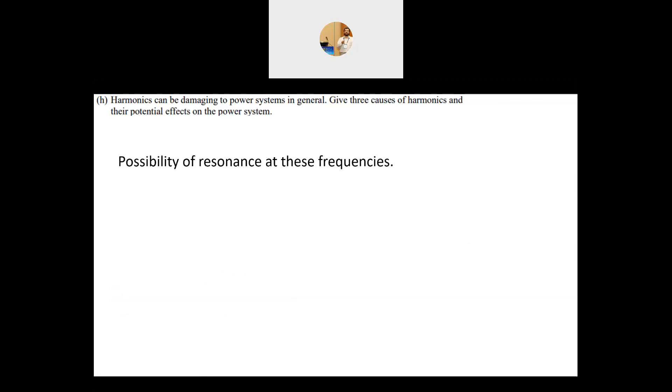The third effect is the possibility of resonance at these frequencies. When you design a system, the power system is basically inductive—you have overhead lines or underground cables, and you have the capacitance of the capacitor banks. Underground cables also have their own capacitance. So you have a mix between transformers and capacitors that might lead to resonance.